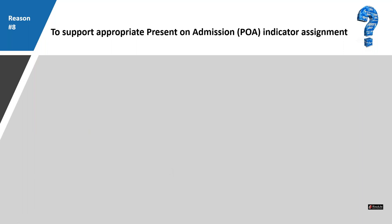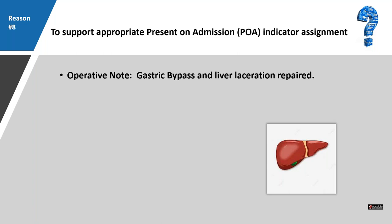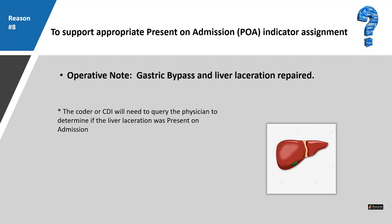Reason eight: to support an appropriate present on admission indicator assignment. If an operative note states the patient had a gastric bypass and a liver laceration was repaired, we need to know if that liver laceration was present on admission. If it was not present on admission, that means an incident occurred during surgery — and most insurance companies will not pay for that. The hospital would have to absorb the cost. So we must query the physician to ask whether the liver laceration was POA.